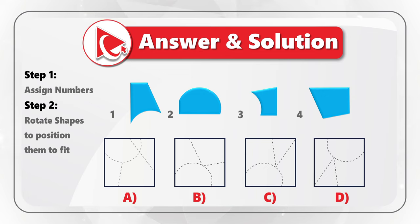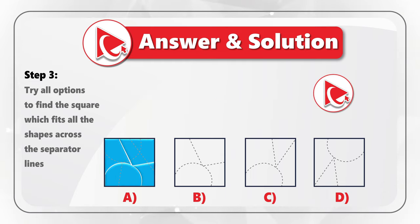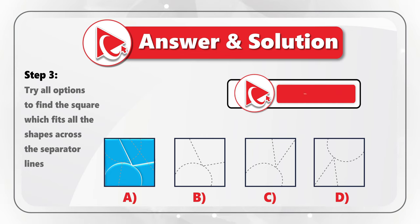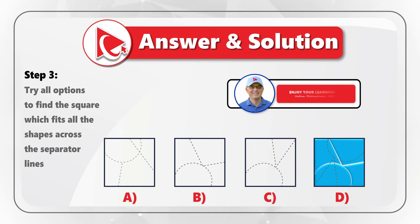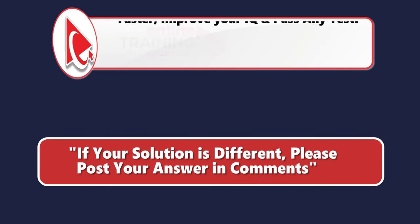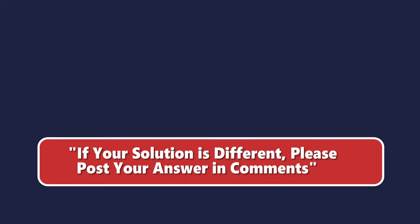Once you have all the shapes rotated correctly, we move to step 3, where we will try all the options to find the square which fits all the shapes. Square A is not going to fit, because there are five shapes based on the border lines. Square C also is not going to fit, same with square D. So the only correct answer here is Choice B. Did you get to the same conclusion? Please make sure to post your answer and rationale in comments.